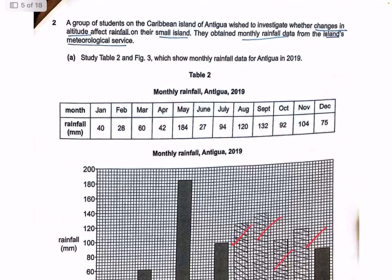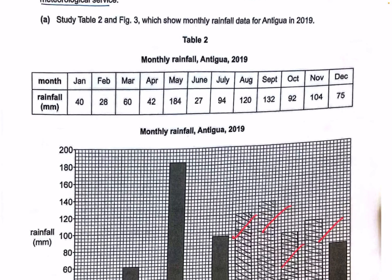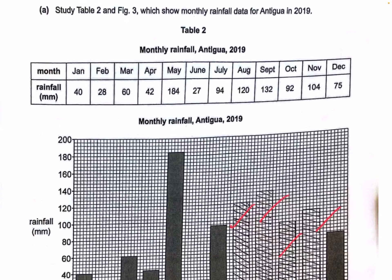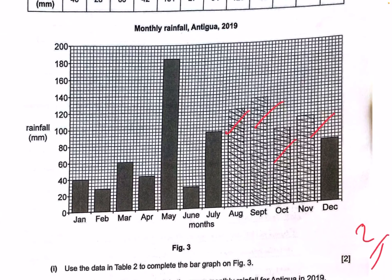What this group of students are trying to investigate is whether changes in altitude affect rainfall. They have monthly rainfall data taken from the island's meteorological service, which means this is actually secondary data, not primary data. The rainfall is tracked across this particular area of Antigua.